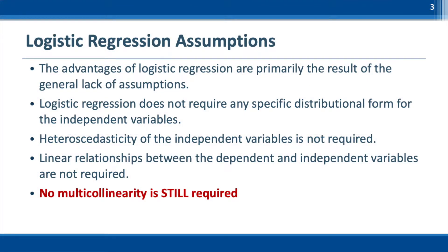Note that logistic regression does not have many strict assumptions as multiple regression because it uses a different algorithm — maximum likelihood. Normality is not required for logistic regression. This is a great advantage because it gives us a lot of flexibility with selecting the dataset. In addition, linearity is also not required. This means a classification method like logistic regression can handle nonlinear relationships between the dependent and independent variables. However, note that the relationship between the odds of the dependent variable and independent variables is still linear.